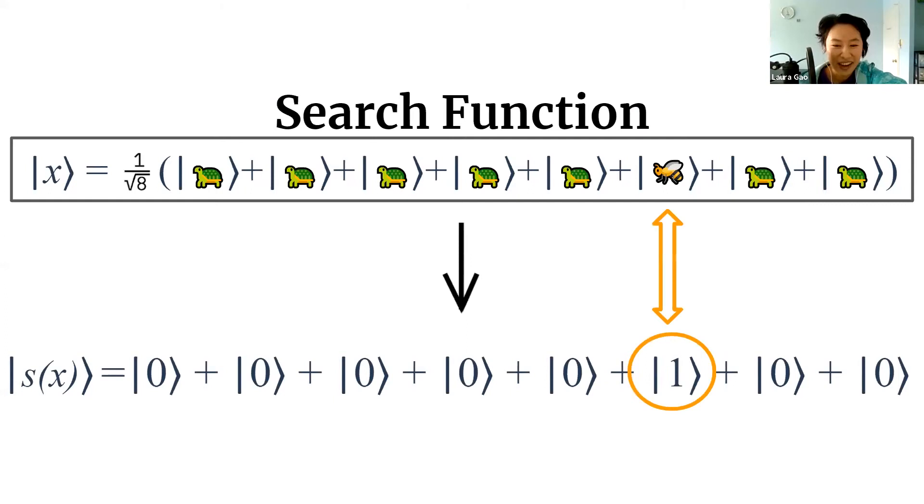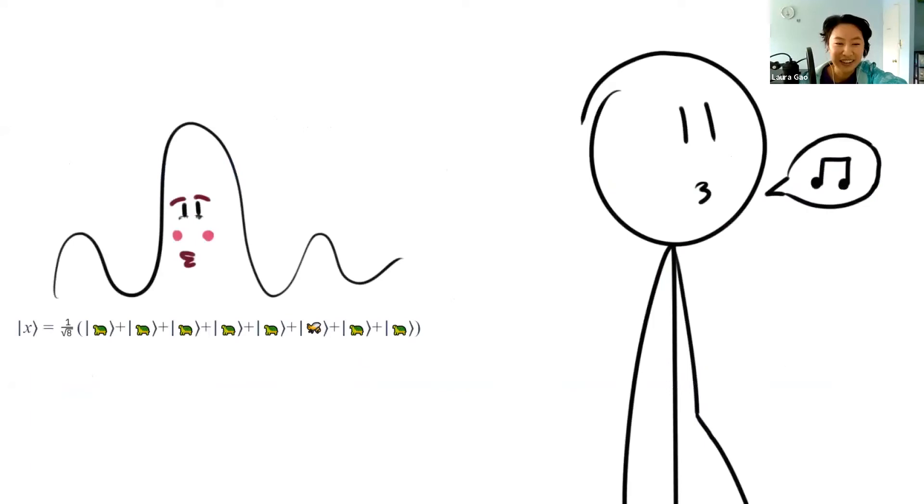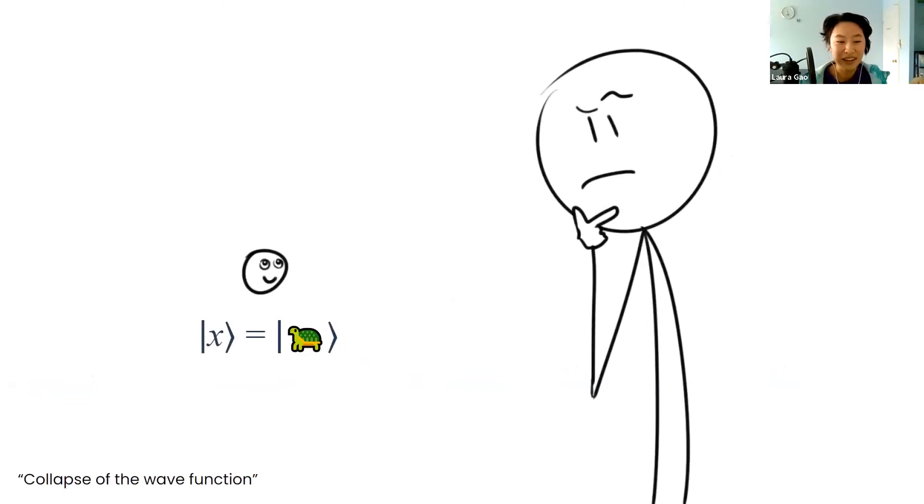Look, there's our answer. We can find where the bee is with only one application of the search function, right? But actually we can't, because we can't actually see where the one is. That's because waves love to play hide and seek. When we're not looking at the wave, they are expressing their full beautiful form being at every single location. But as soon as we look at it, the wave suddenly changes into being at only one location, and we call this the collapse of the wave function.